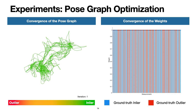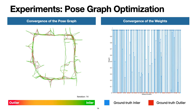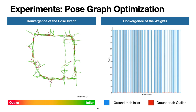As a quantitative visualization of the GNC algorithm, we show the convergence of the pose graph and the convergence of the weights on the Intel dataset using GNC-TLS. We see that GNC gradually increases the weights of inliers and decreases the weights of outliers, so the estimation becomes more and more robust as GNC continues to reject more outliers.